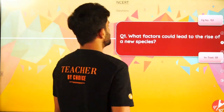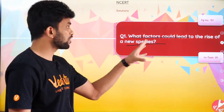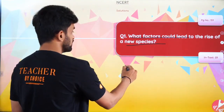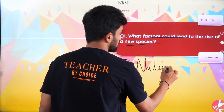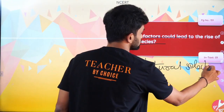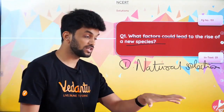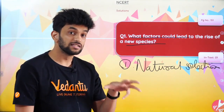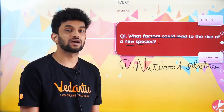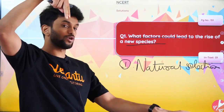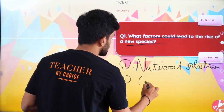Next question: 'What factors could lead to the rise of a new species?' Number one — natural selection. In natural selection, some organisms are selected by nature based on their traits. For example, green beetles were selected because their color helped them hide in the grass — when a crow looked, they were hidden. Whereas red beetles were visible and got eaten.